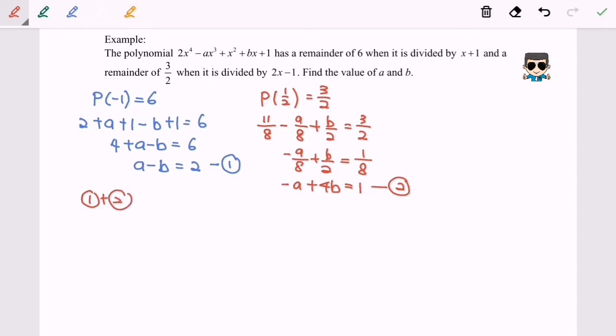So I will have 3b equals to 3, and b is equal to 1. By substituting b equals to 1 into the first or the second equation, I will have a minus 1 equals to 2. Finally, my a will be equal to 3.